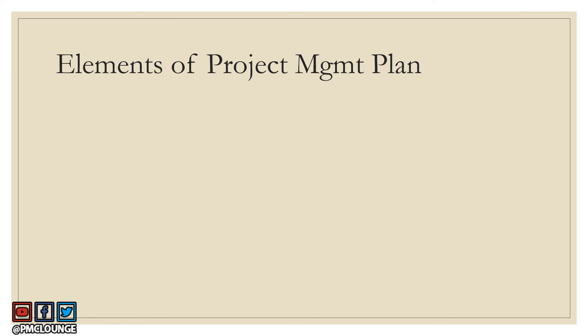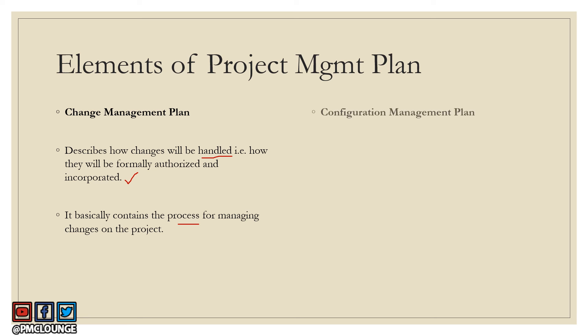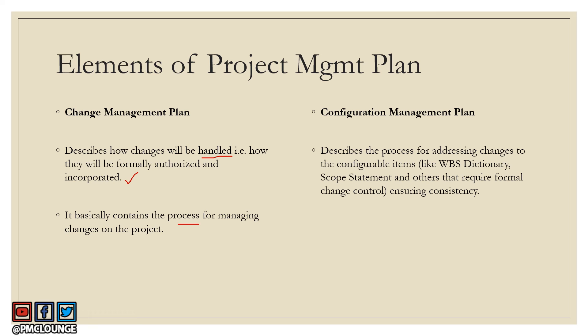The 14th element is the change management plan. This document describes how changes will be formally authorized and incorporated in the project — any change of any nature that shows up, and the process for managing it. The 15th is the configuration management plan, which describes the process for addressing changes to configurable items — not changes to the project itself, but to items like the WBS dictionary, scope statement, and any formal document or deliverable that requires change control.